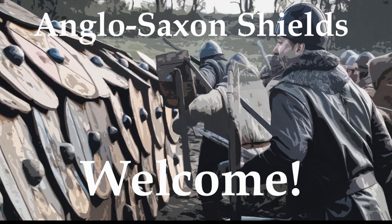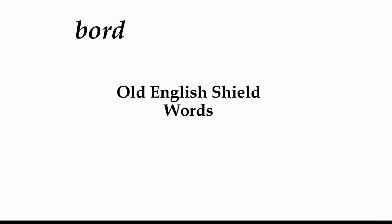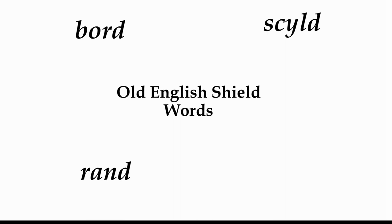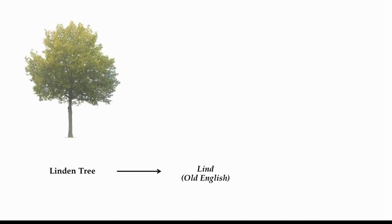Many Northern European peoples would have used similar practices when making shields. Before we get started, let's look at some Old English words related to shields. The first is 'bord' — a fun fact is that bord meant both shield and table in Old English, and it still means table in Modern Norwegian. The second is 'rand,' which was specifically the shield edge, just as it means edge in Modern Dutch. Third is 'scield,' from which we get the Modern English word 'shield' — in Old English, the SC was pronounced like the modern SH. Finally, 'lind,' which comes from the linden tree.